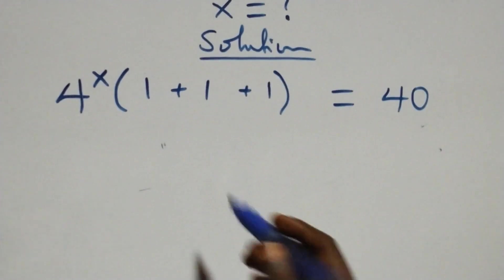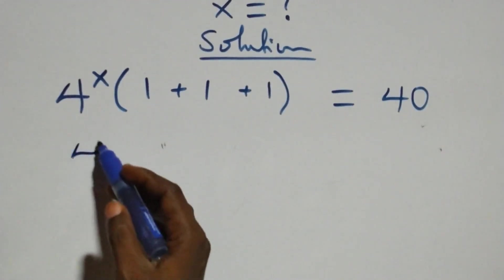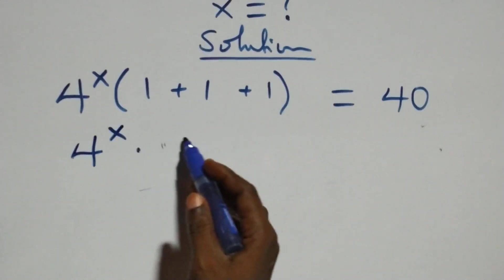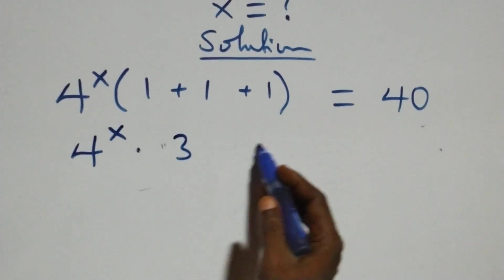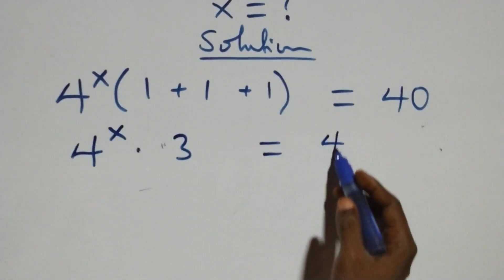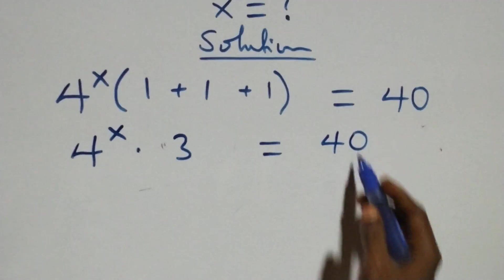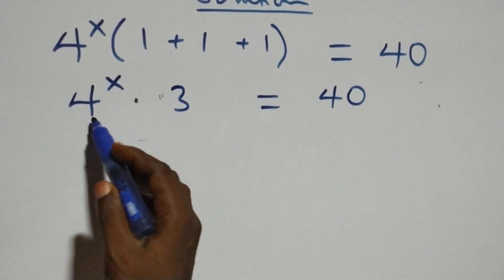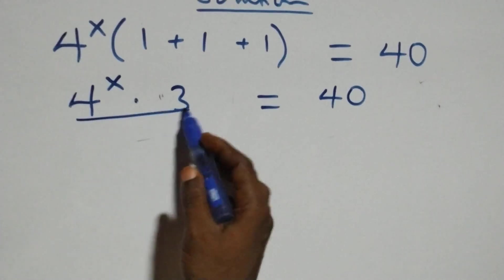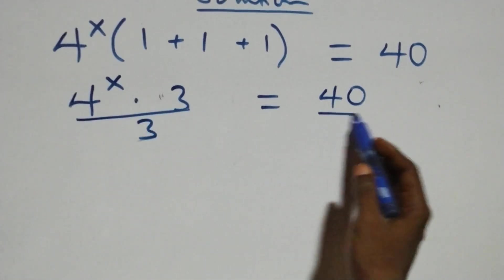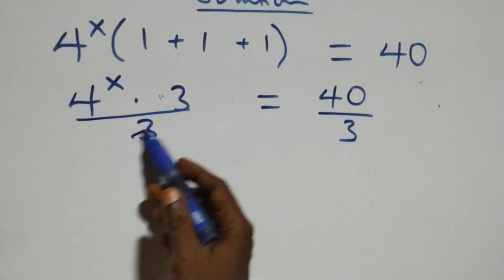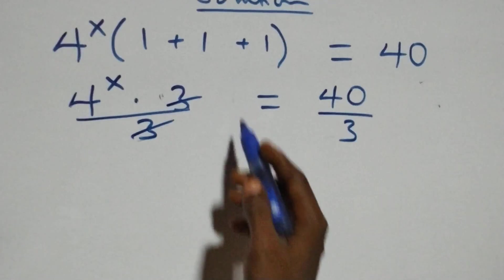Here we have 4 raised to power x times 1 plus 1 plus 1, that's 3, equals to 40 on this side. Next step, we divide both sides by 3 — divide this side by 3, also divide this side by 3. Then the 3's cancel each other.